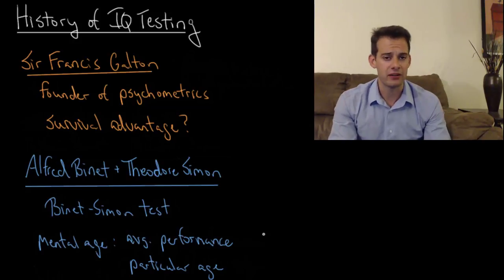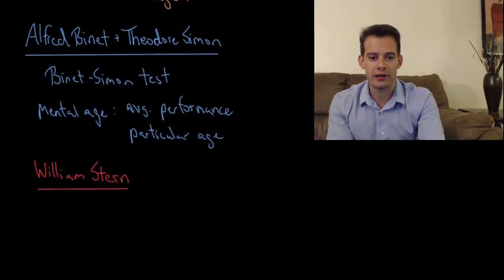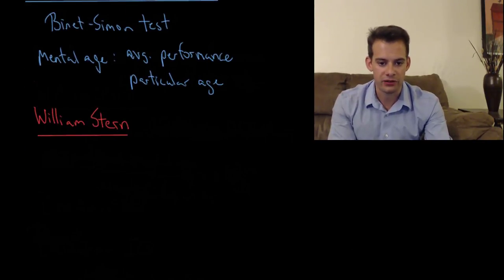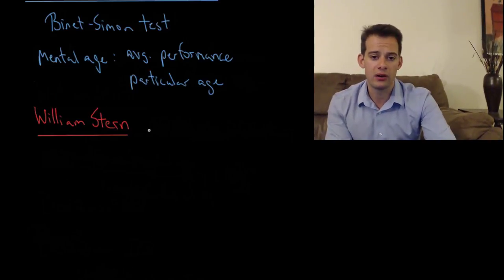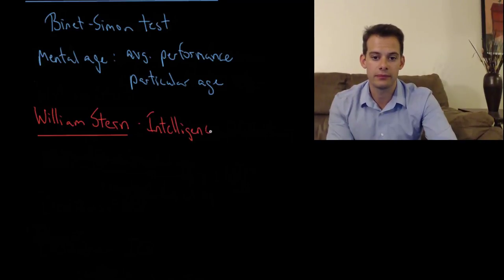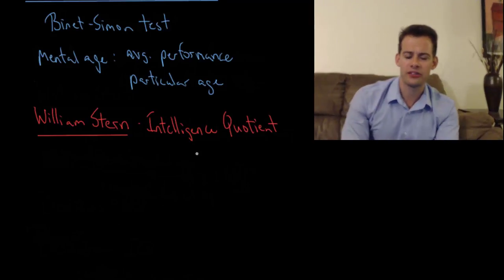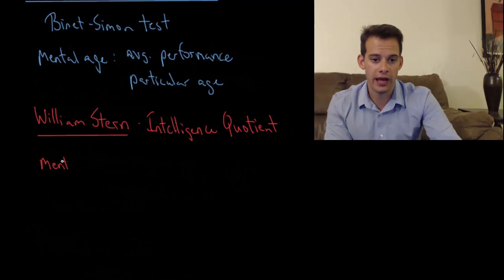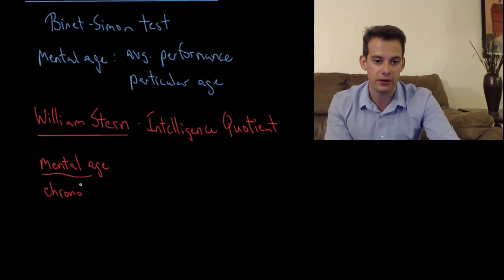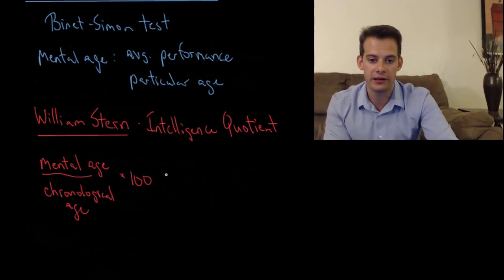Okay, this child is five years old but he's performing at a mental age of seven. Or maybe this child is eight years old but he's only performing at a mental age of six. He's performing as well as most six-year-olds. So this concept of mental age was then adopted by a German researcher named William Stern. And here's a picture of William Stern. And Stern used this to create an intelligence quotient or IQ.